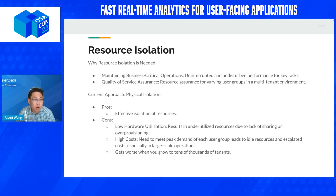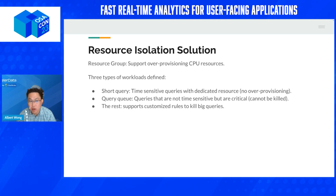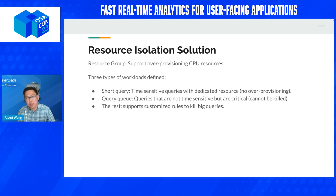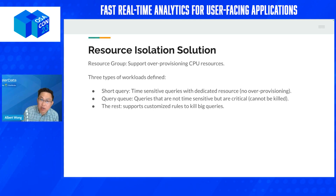Another thing we do for scaling is priority-based resource isolation. This lets you avoid over-provisioning systems and paying for resources you don't need. Short queries that are time-sensitive can be pushed to the top of the priority queue, while other critical but non-time-sensitive queries are handled accordingly, ensuring your most important queries execute even under constrained resource conditions.